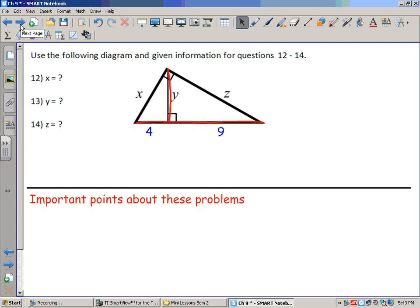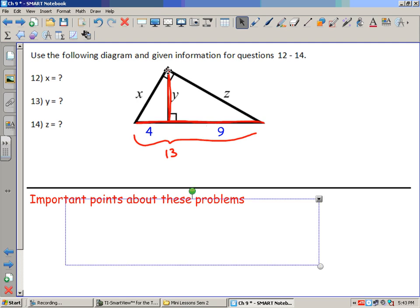Use the following diagram and given information for this problem. This is an altitude on the hypotenuse. As you see, I've highlighted the altitude y and the hypotenuse 4 and 9, or if you want to call it the whole hypotenuse, 13. There are some important things when you're approaching this question, trying to find x, y, and z that you need to remember.